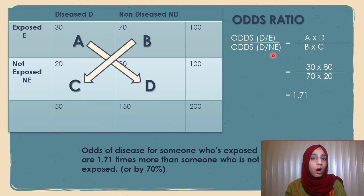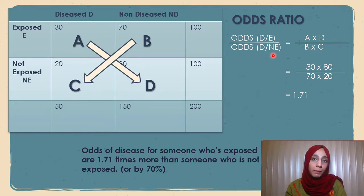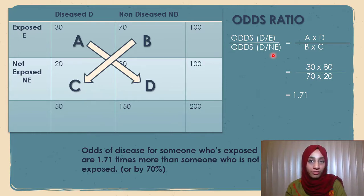To stress again, odds ratio is different from relative risk. In relative risk, we were talking about probabilities, whereas in odds ratio, we are talking about the odds of disease.